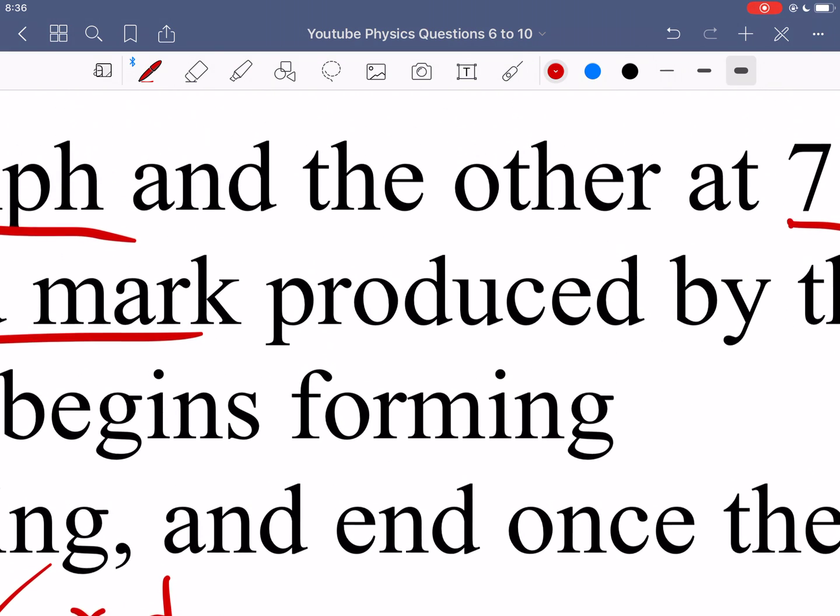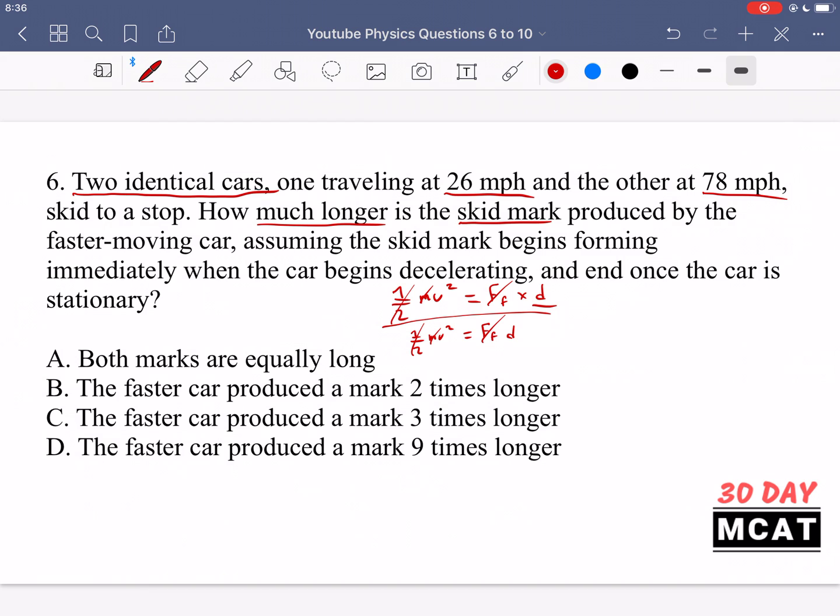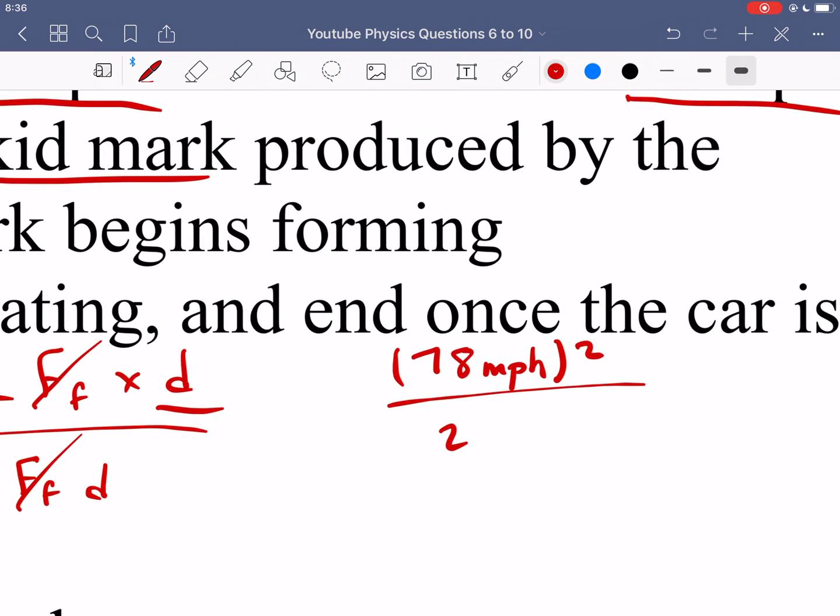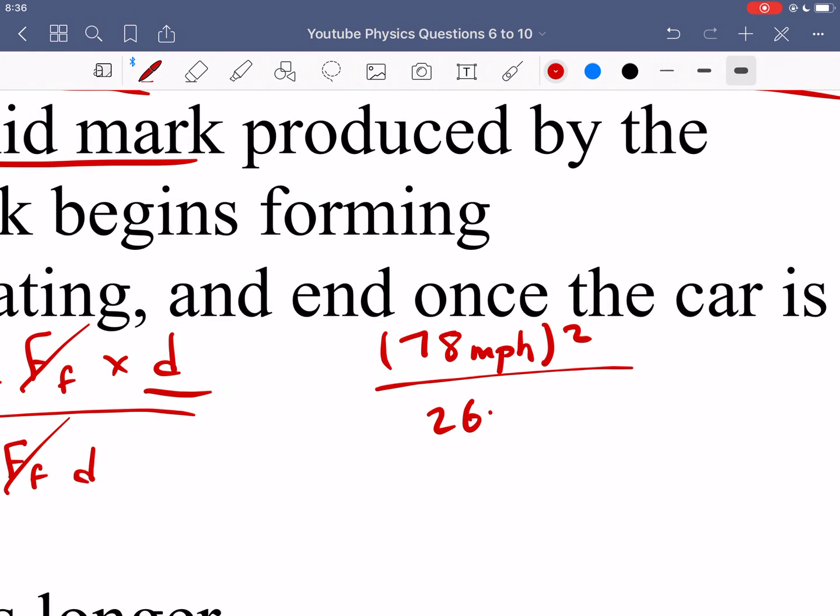So let's look at our velocities that we got, 26 and 78. So we have 78 squared over 26 squared. And then this is just like, let's say distance 1 over distance 2.